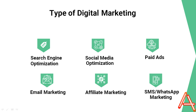The second type of digital marketing is social media optimization. Social media optimization is the process of optimizing your social media profiles to improve your online presence. This includes creating quality content, engaging with your followers, and building a strong online community.